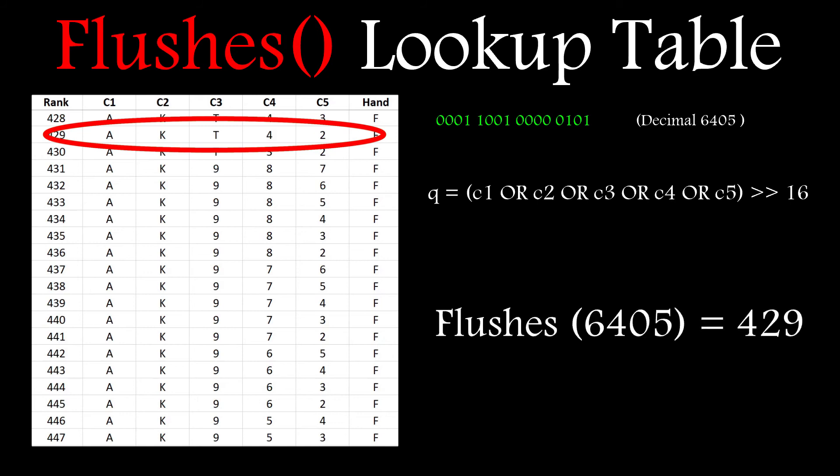So I go to my flushes array to row 6405 and pop in the hand rank of 429 for that card combination. And I go through the entire hand equivalency table and I do this for every flush that I find.